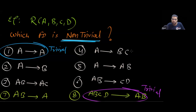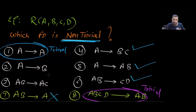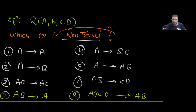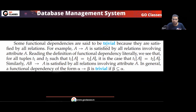You can see this is non-trivial because A is not a superset of BC. This is non-trivial because A is not a superset of AB. So the non-trivial functional dependencies in the examples are numbers two, three, four, five, and six. Non-trivial functional dependency means a functional dependency which is not trivial.